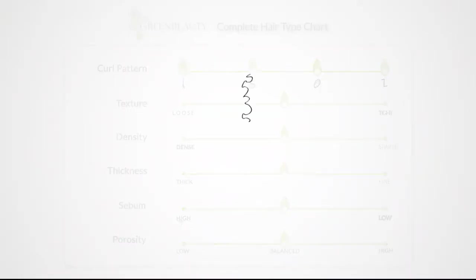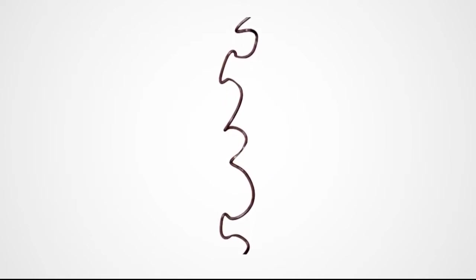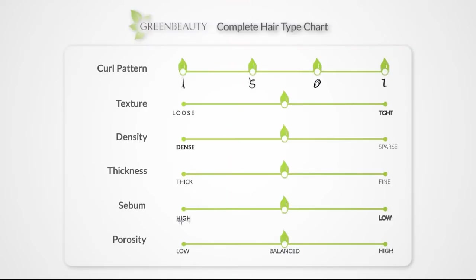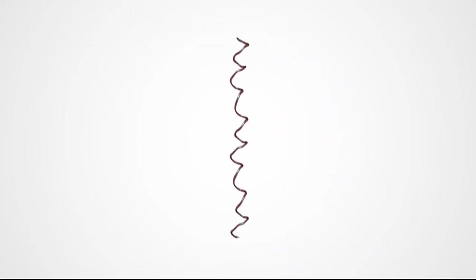Great segue into the S curl pattern. If you take a closer look, the S curl pattern has repetitive stretch curves that make an S pattern. The O curl pattern are loops that curl up into itself like a slinky. The last curl pattern is the L or Z, depending on how you see it. These are sharp jagged bends like the hair strand was crimped.